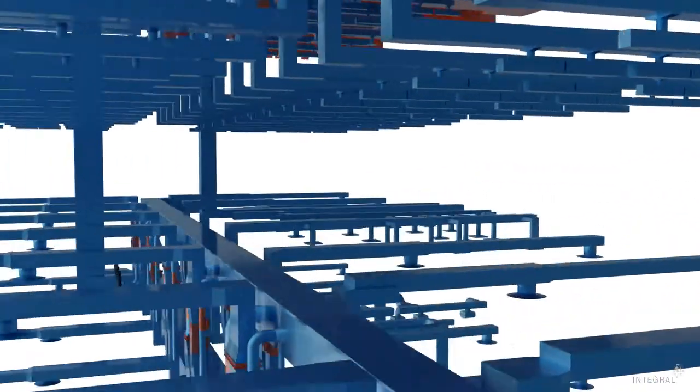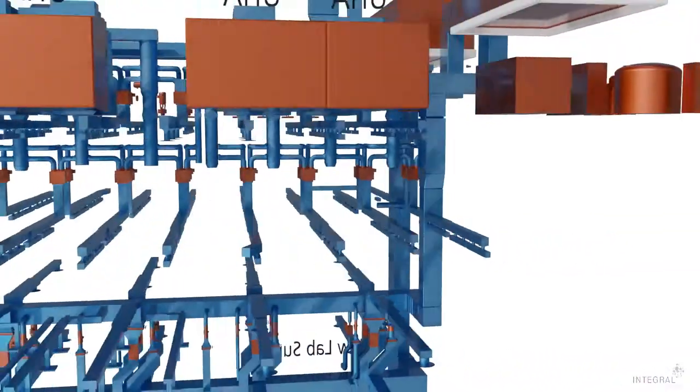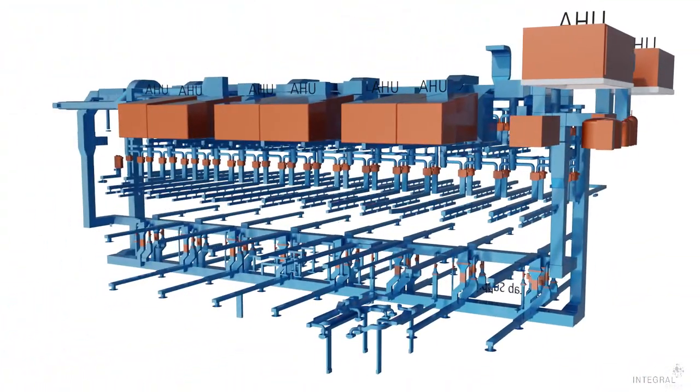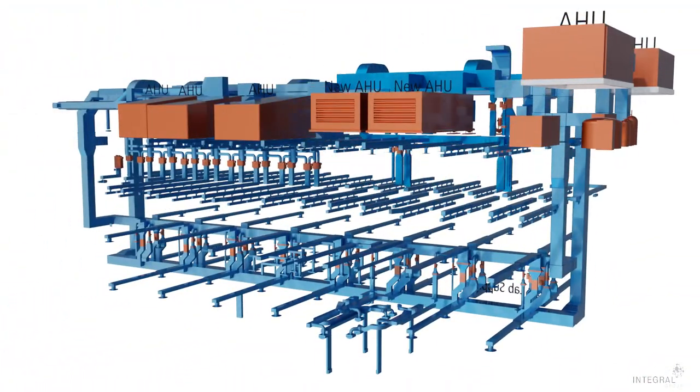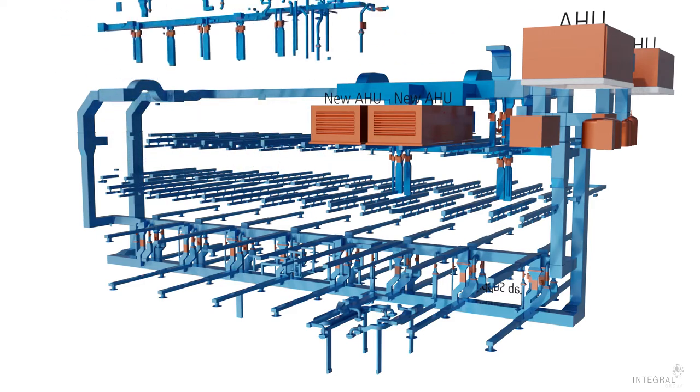With levels one and two switched over to the new infrastructure without disruption, we can go through and swap out the remaining air handling units and supply levels three and four.